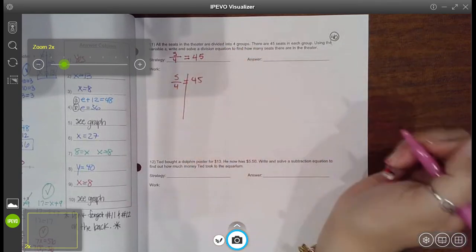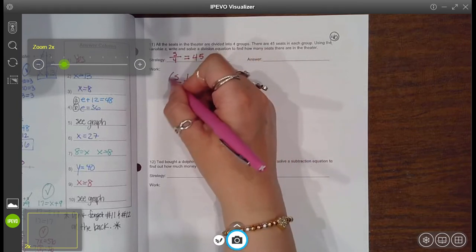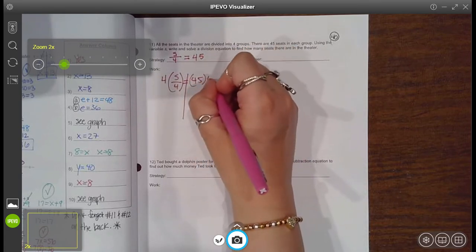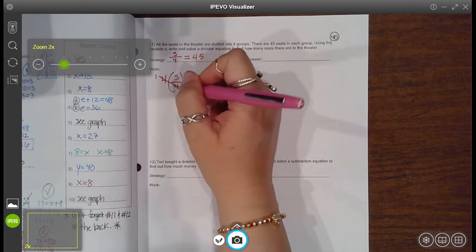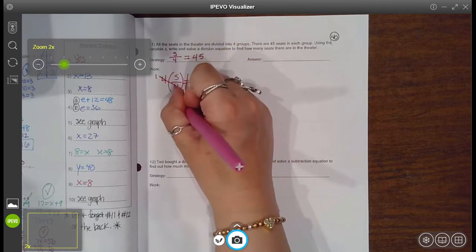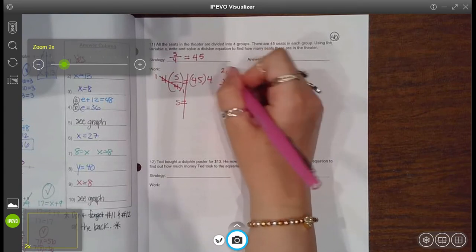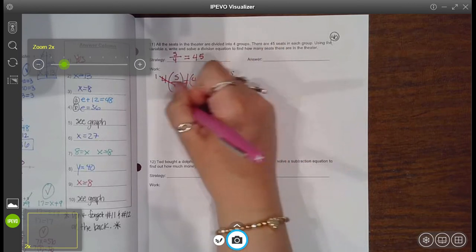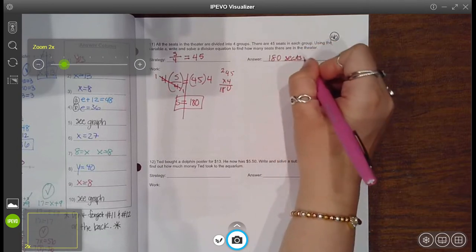Now to solve it, here's my workspace. To get s by itself, draw a line down. What's preventing s from being by itself? This four. And it's being divided. What's the inverse of dividing by four? To multiply by four. Whatever you do to one side, do to the other. Now those fours cancel and become one, right? Because they're diagonally across from each other. Think of like fractions. They cross cancel. Now you have one times s, which is just s. Over here, 45 times four, you get that 16 plus two is 18. So 180. So that means that there are 180 seats in the theater.